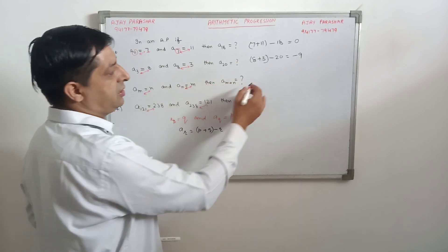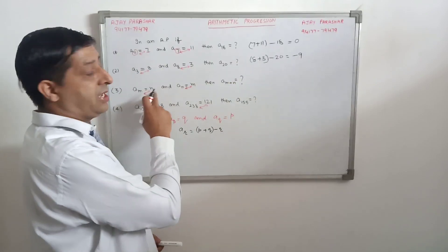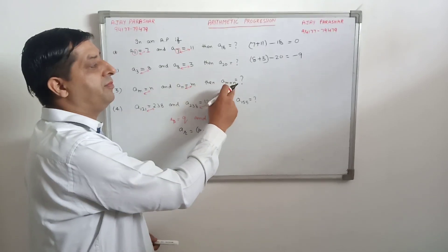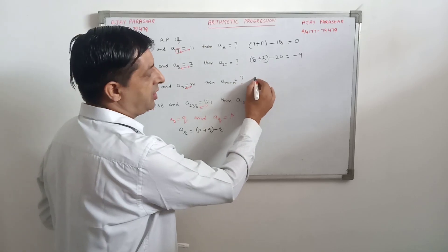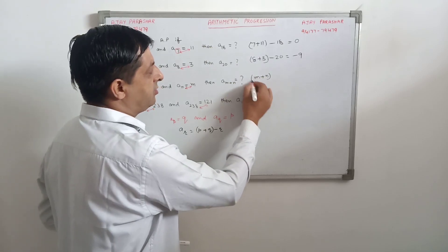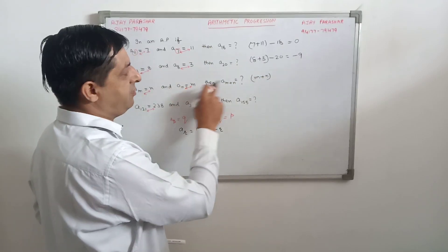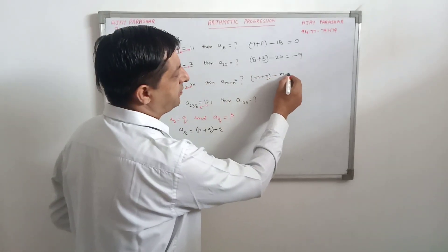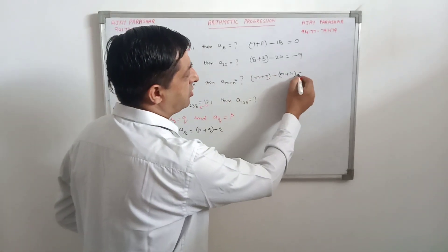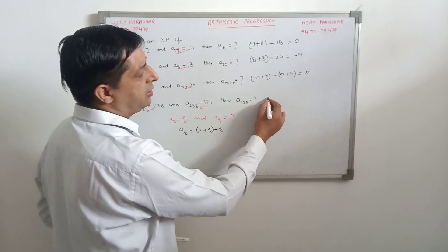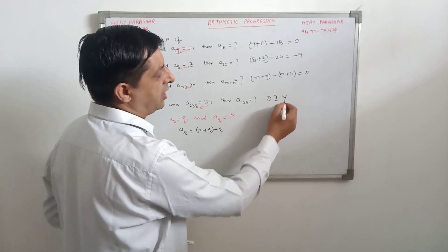Now, let's try here. Here, Mth term is N and Nth term is M, then M plus Nth term, that is M plus N, here we add them, minus M plus N, that gives us also 0. And try it yourself, do it yourself.